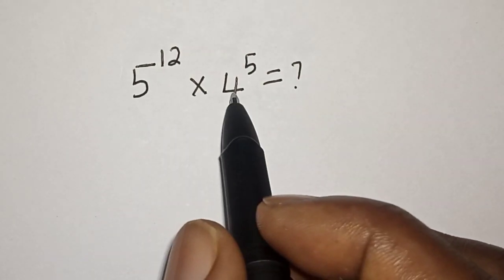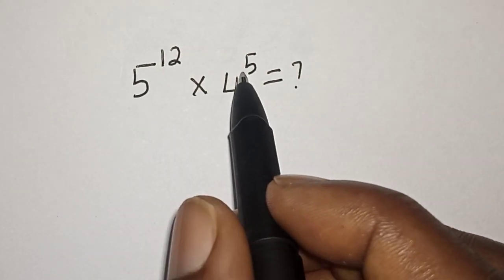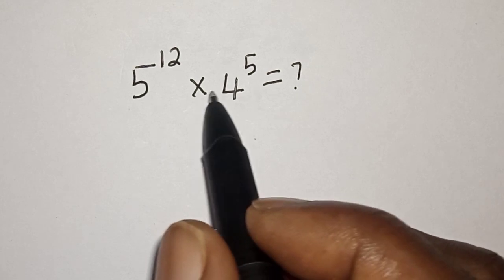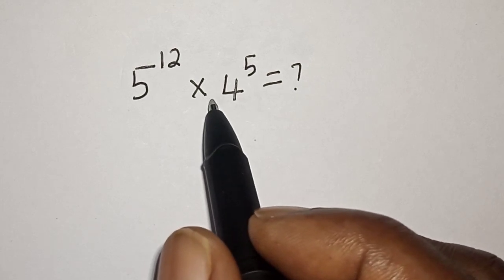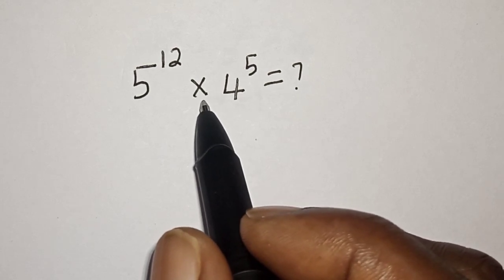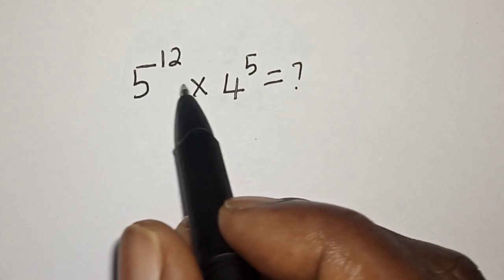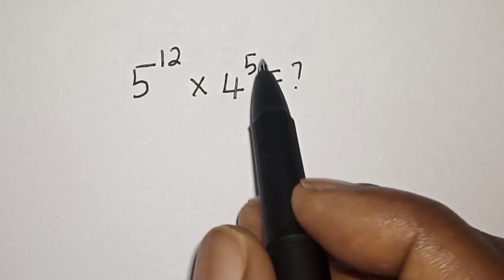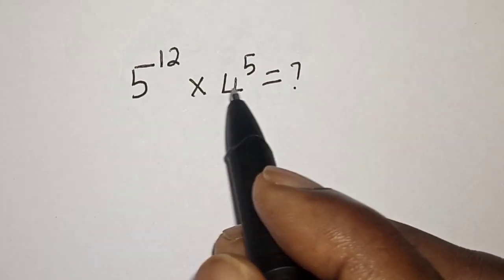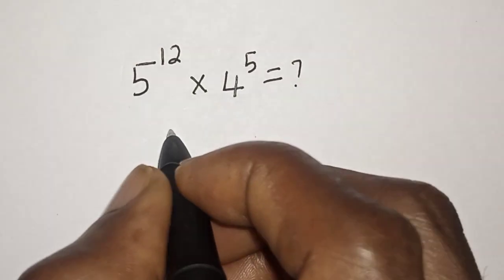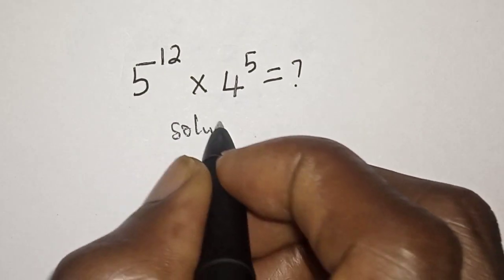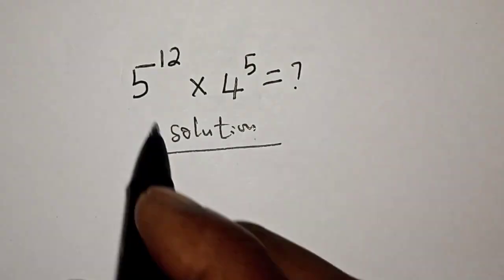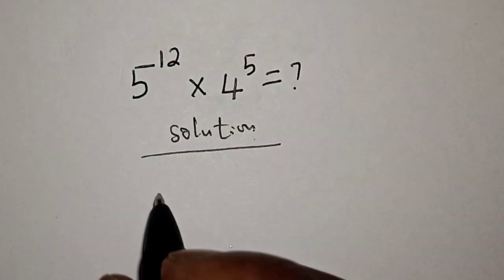5 raised to power 12 multiplied by 4 raised to power 5 is equal to what? Hi everyone, welcome to my class. In this class we want to simplify this math problem. But before we proceed, please don't forget to like, share, comment and subscribe. Solution: 5 raised to power 12...